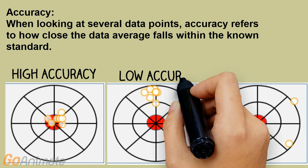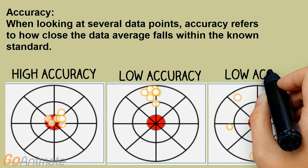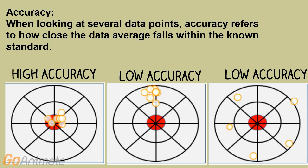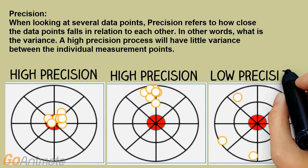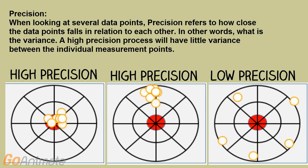In MSA, verify the gauge has high accuracy. When looking at several data points, accuracy refers to how close the data average falls within the known standard. A process with high accuracy will have most of the data points clustered around the target value, whereas in a low accuracy process the data points are away from the target value. Precision refers to how close the data points fall in relation to each other — in other words, what is the variance? A high precision process will have little variance between the individual measurement points; therefore, the data points will be clustered around each other.